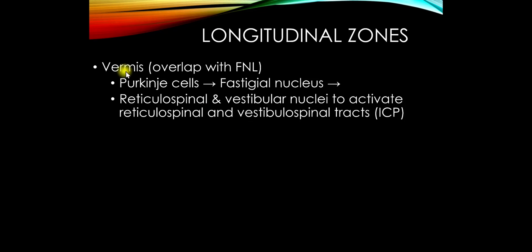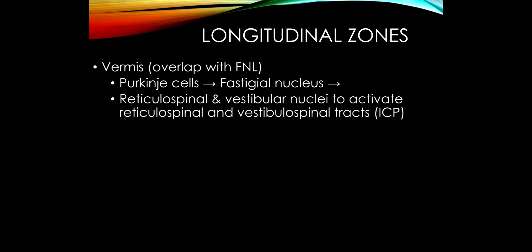Let's add more detail. The vermis, which overlaps in function with the flocculonodular lobe, has Purkinje cells in the cerebellar cortex — the only cells I'll ask you to know. All output of the cerebellum is via Purkinje cells. Purkinje cells in the vermis project to the fastigial nucleus — the midline deep cerebellar nucleus — and then to the reticulospinal and vestibular nuclei, which become upper motor neuron pathways controlling truncal midline musculature via the reticulospinal and vestibulospinal tracts.